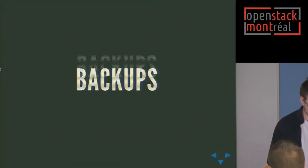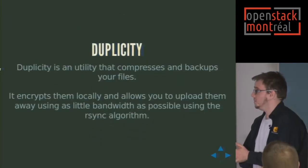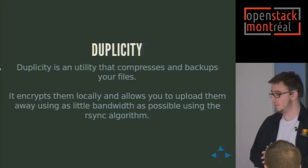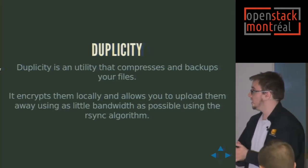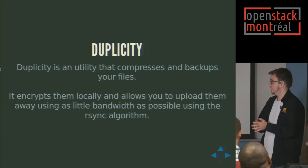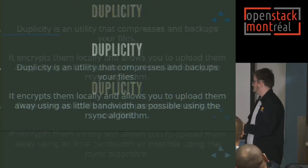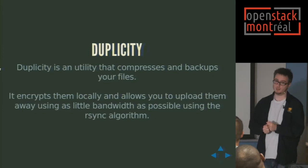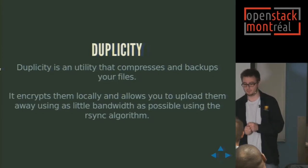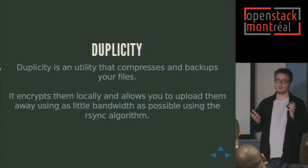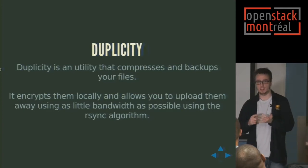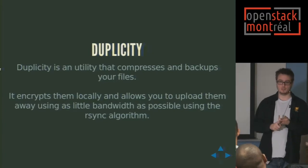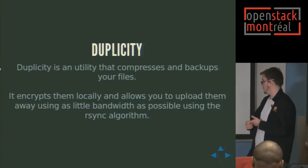Let's talk about backups. The first tool that allows you to manage backups is Duplicity. Duplicity is a utility that compresses and backs up your files, encrypts them locally, and allows you to upload them using as little bandwidth as possible using the R-sync algorithm. Duplicity is a generic backup tool — you can backup to files, by FTP, by SCP, but there's also the Swift backend, and that's what is interesting for us right now.